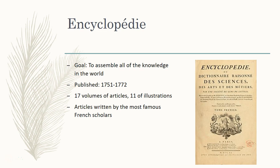Unlike the works of Voltaire and Montesquieu, which were published either in the Netherlands — places like Rotterdam and Amsterdam — or in Switzerland — places like Geneva — because of strong censorship in France, the Encyclopedia was published in Paris. It was originally approved by King Louis XV. Diderot had great connections with nobles who saw the good that would come from trying to assemble all knowledge. But eventually, and actually quite quickly, this endorsement by the king would be removed.